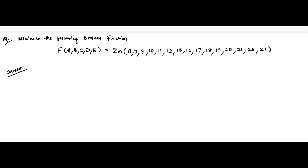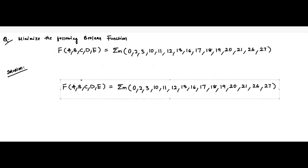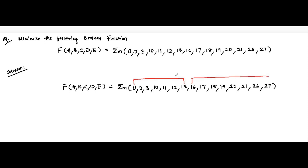First, what we will do is take the function and split the variables into two parts: the 0 to 15 range and the 16 to 31 range, because two separate K-maps will be required. From 0 to 13 goes here, and from 16 to 27 goes here. This falls in the 0 to 15 range; this falls in the 16 to 31 range. This is the first K-map and the second K-map.